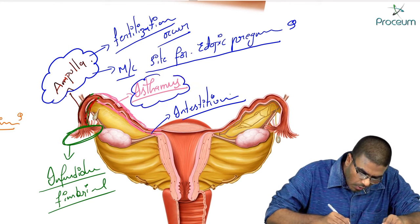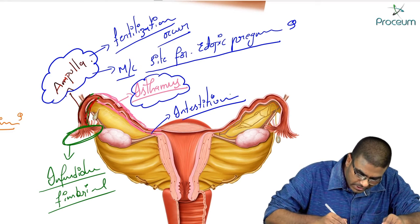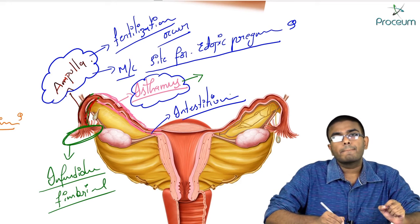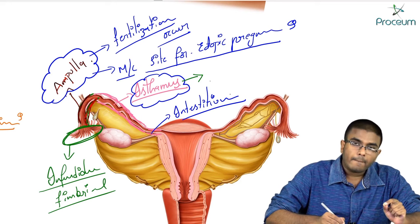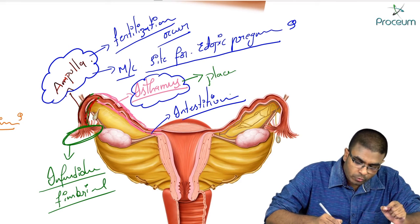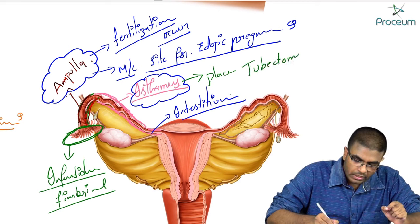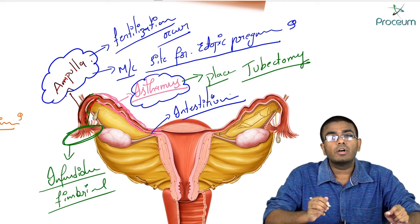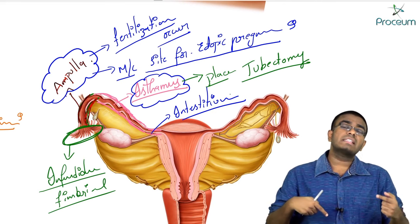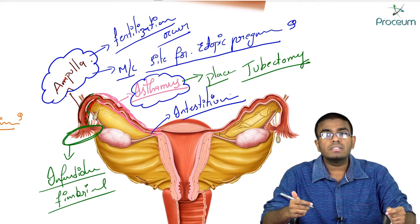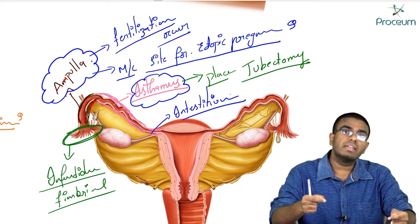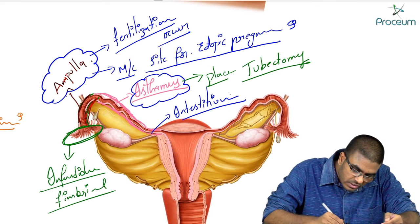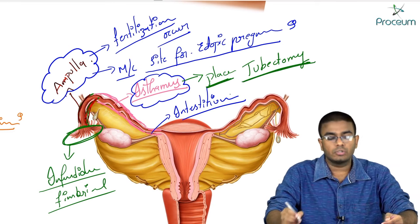Let's discuss the isthmus. The isthmus is the place where you perform a tubectomy — it is the most preferred site. Why? Because if the female wants to conceive again, you need to perform reanastomosis, and isthmo-isthmic reanastomosis has the highest success rate.